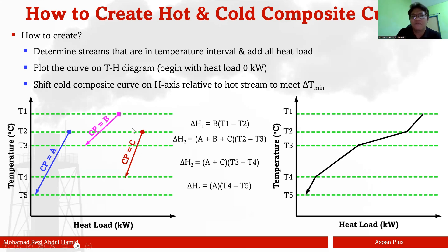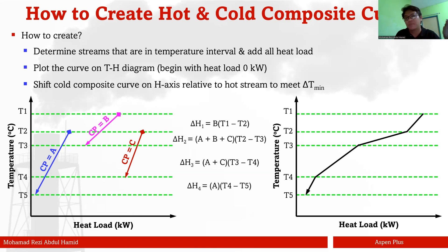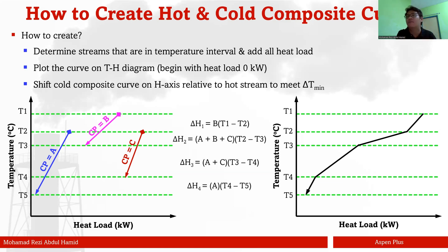The blue line here is one stream originally at temperature T2 that needs to be cooled down to T5, with a CP of A. The second stream has temperature T1, needs to be cooled to T3, with CP of B. The third stream is originally at T2, needs to be cooled to T4, with CP of C. Different streams have different CP values because of their different composition, molecular makeup, and mass flow rate.